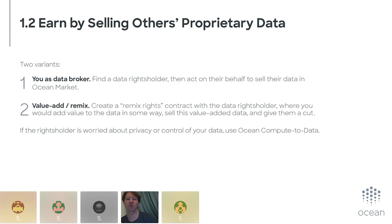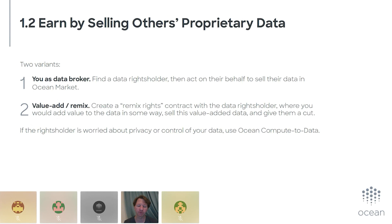Another way is the idea of remix or value-add. Maybe someone out there has data they think is valuable. You take it, repackage it, make it easier to read or consume in a particular format, and give them a cut as well. This is similar to remix rights in IP — like the Beastie Boys taking samples from other music, getting licenses, and then selling their own music on top. So it's IP sitting on top of IP. This is data that others own, which you sell directly or modify with some value-add. Once again, compute-to-data can help if they're worried about control or privacy.